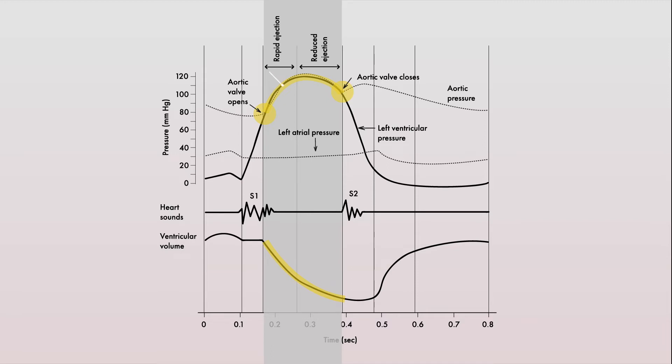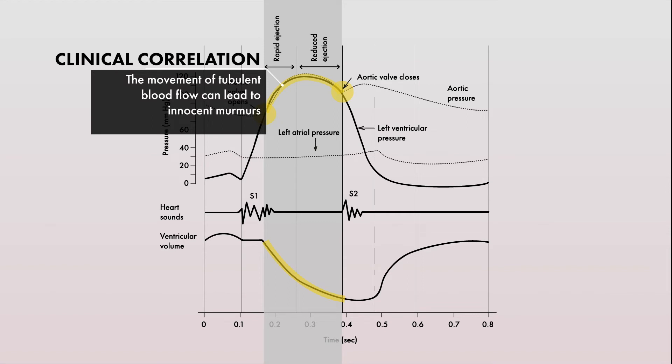This is the time, especially in children and young adults, where this turbulent movement of blood flow forward can result in a systolic murmur that can be heard normally in this age group. These are referred to as innocent murmurs.